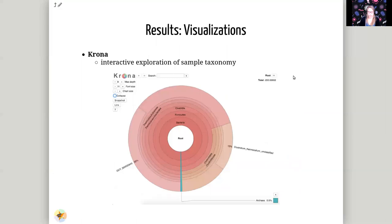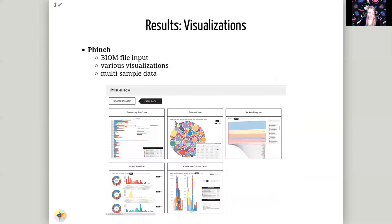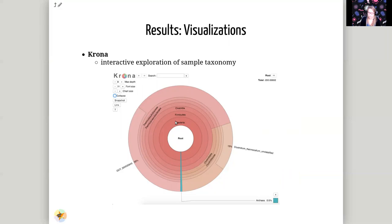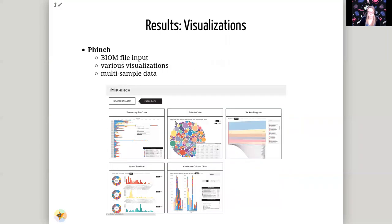After all is done, it's always nicer to have a visualization rather than just looking at a table. Krona is a very nice tool for this — it lets you interactively explore these plots, clicking on different taxonomic levels to explore your sample. Finch is another online tool that is very good for multi-sample analyses, with nice graphs to show how different samples compare.